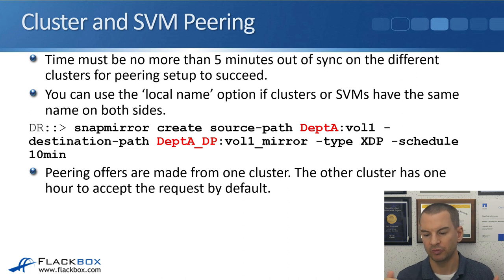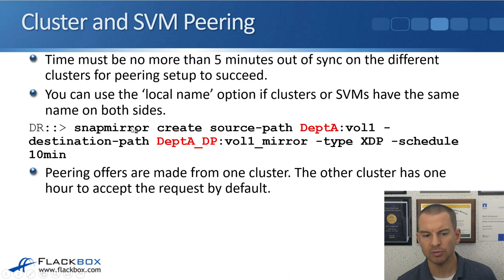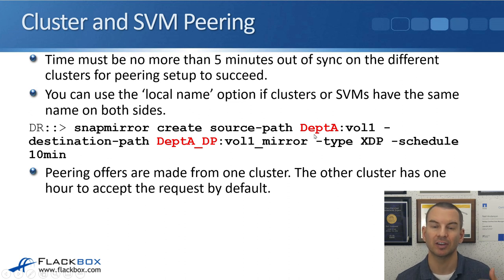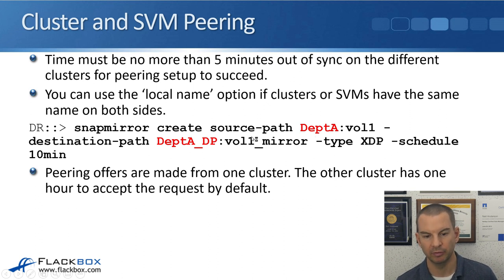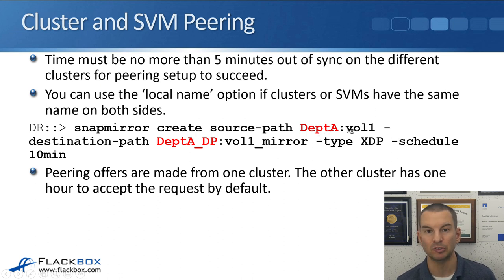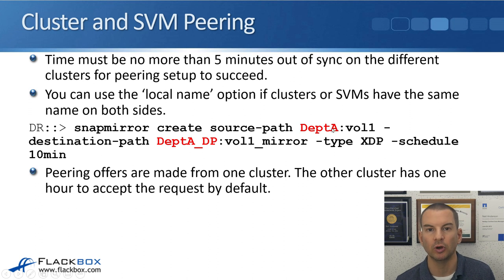So you couldn't have SVMs with the same names on both clusters. You can see the reason for that in the SnapMirror create command — you specify for the paths the SVM name and the volume name, both for the source path and for the destination path. You don't specify the cluster name. So if the destination cluster had an SVM named Department A, and you're trying to replicate from a source SVM also called Department A, it would be confused — it wouldn't know which one you're talking about.